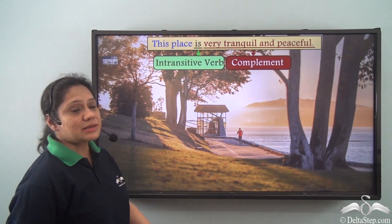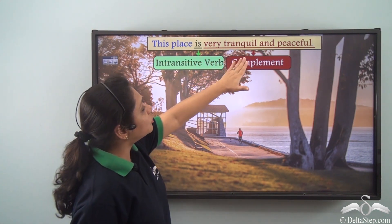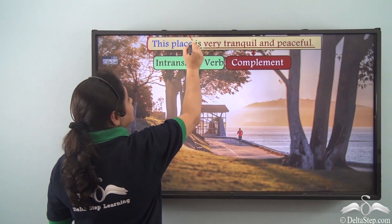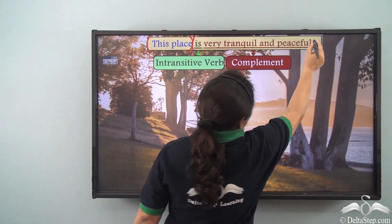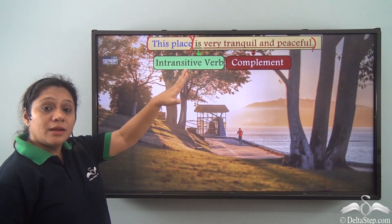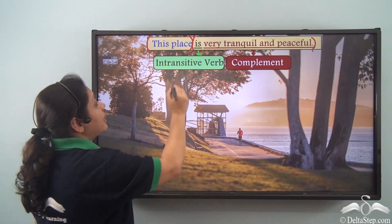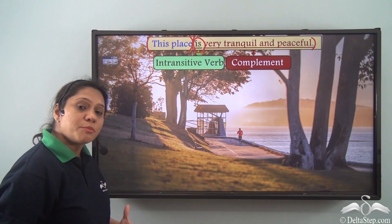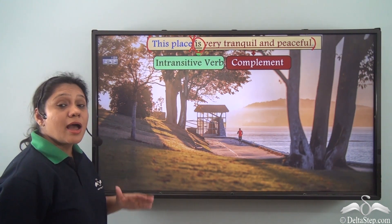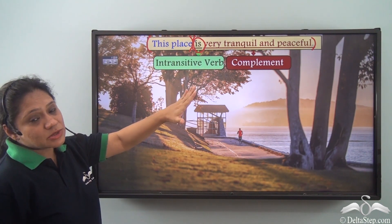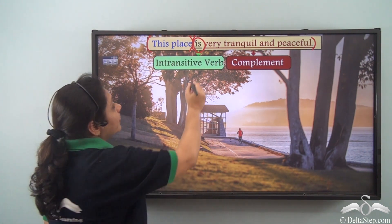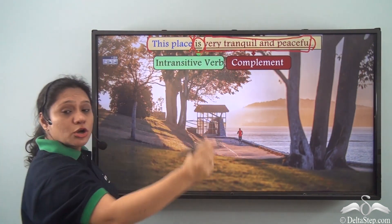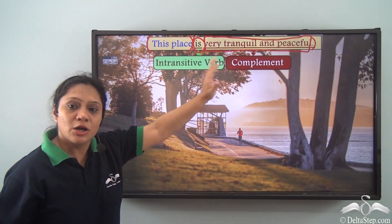So if I have the sentence 'This place is very tranquil and peaceful,' in this sentence 'this place' is the subject and 'is very tranquil and peaceful' is the predicate. This predicate has the be verb 'is,' and we have learnt that any word or group of words after the be verb is the complement. So here 'very tranquil and peaceful' is a group of words acting as the complement.